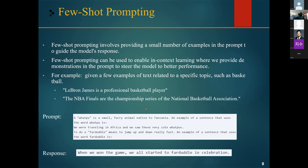Examples might include sentences like 'LeBron James is a professional basketball player' or 'The NBA Finals are the championship series of the National Basketball Association.' Our few-shot model could use these examples to fine-tune its understanding of basketball-related language, allowing it to generate more accurate and relevant text related to that domain. Another example is defining a new word — we give one example and then ask the model to use a new word in a sentence. This is a one-shot example where we give just one example.